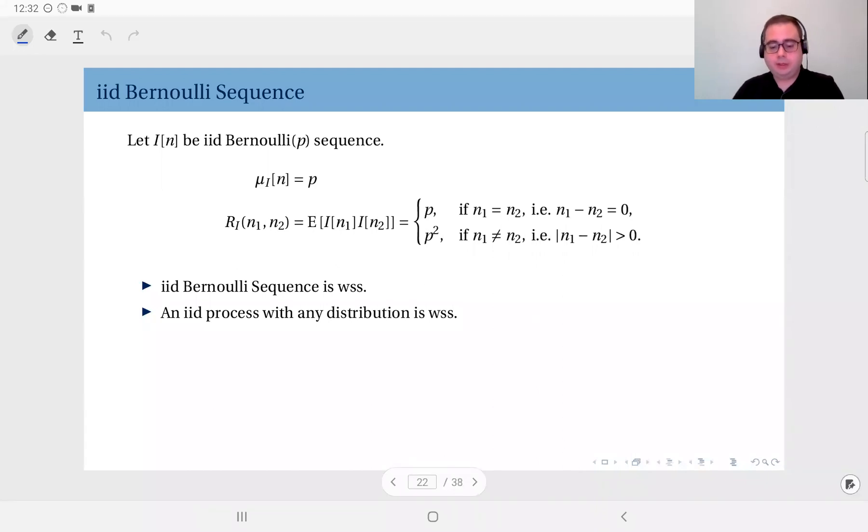The first one we will talk about is the IID Bernoulli sequence. So what does it mean, IID Bernoulli sequence? Essentially, this is a discrete time, discrete valued process, and the observation at any time index is a Bernoulli random variable. Not only a Bernoulli random variable, but also the same distribution, so it has the same parameter across time. And also, two observations at different times are independent. That's why we say IID. You have a sequence of Bernoulli random variables, and each of them are independent. So you can also think this as a sequence of coin tosses.